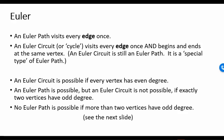Let's talk about Euler paths and Euler circuits. An Euler path visits every edge once. An Euler circuit, or cycle, visits every edge and also begins and ends at the same vertex. An Euler circuit is still an Euler path — it's just a special type. So when you're trying to cover edges, you're doing things like plowing roads where you need to go down every road and plow.